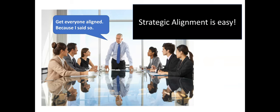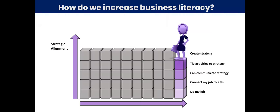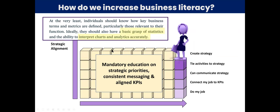And I start to feel like executives are acting like the skinny weight loss instructors. Strategic alignment is easy because it's easy for them. So how do companies suggest that you increase business literacy? It's not unlike what we see for data literacy. Mandatory education on strategic priorities, consistent messaging and aligned KPIs. And it sounds a little bit like what we saw for data literacy. We need to have people have a basic understanding, but start to actually become much more capable.